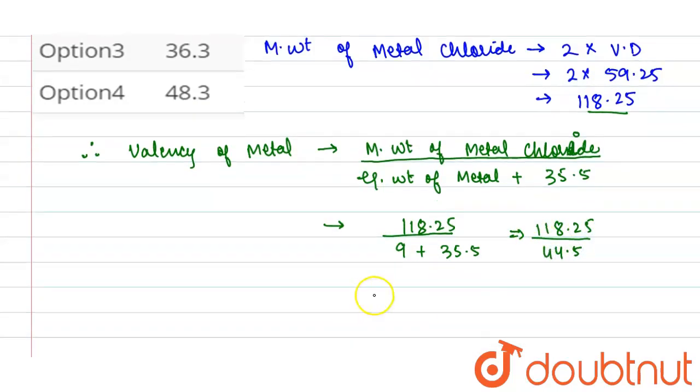So valency of metal comes out to be 2.66.